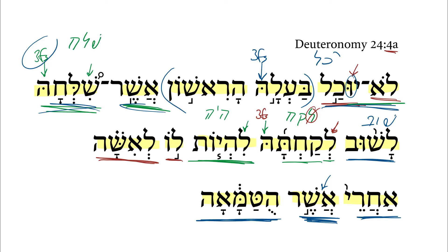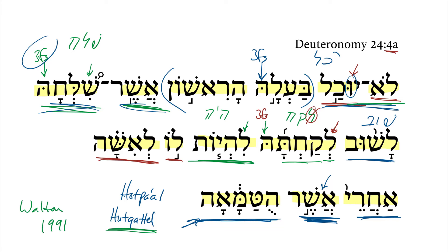And then this is the third feminine singular verb, and the parsing can be a little bit tricky. Hot pa'al is one option. Another one that John Walton proposes is a hut katel — these are just different ways of trying to talk about the same form here. If we follow John Walton in a 1991 article in Hebrew Studies, he argues that this means something like after she has been made to declare herself to be unclean. So this is not that she has defiled herself or has been defiled in this second marriage, but rather she has been forced to declare herself unclean. I think that fits a little bit better with this context as it relates to the indecency that was found in her — this physical defect that neither of these men prefer.